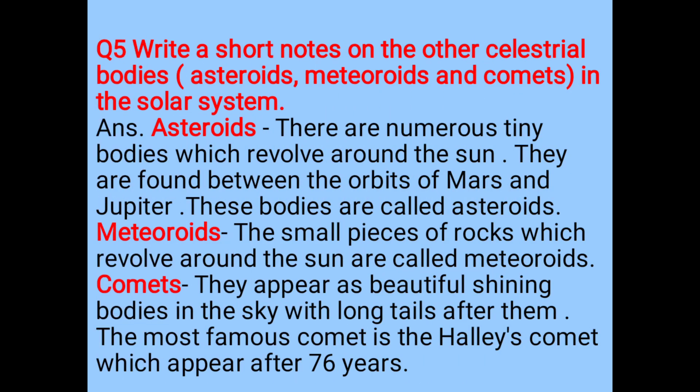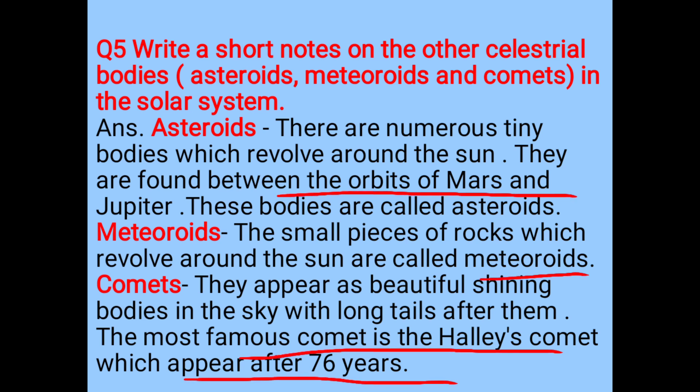Write a short note on other celestial bodies: asteroids, meteors, and comets. There are numerous tiny bodies which revolve around the Sun, found between the orbits of Mars and Jupiter — these are called asteroids. Small pieces of rocks revolving around the Sun are called meteors. Comets appear as beautiful shining bodies in the sky with a long tail. The most famous comet is Halley's Comet, which appears after 76 years.